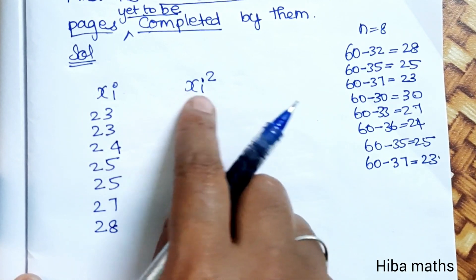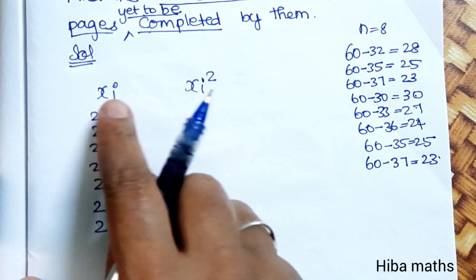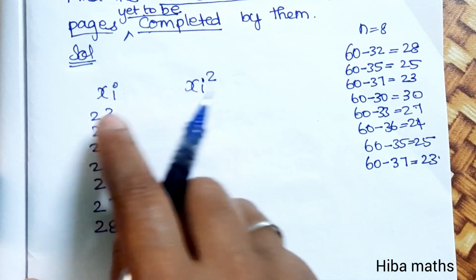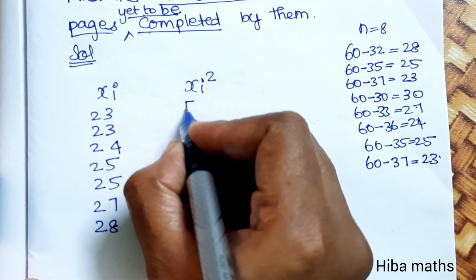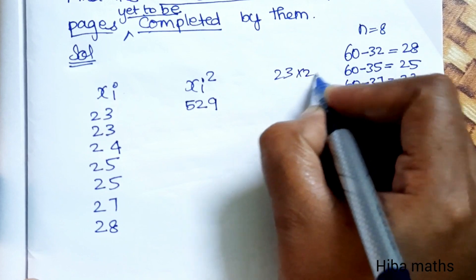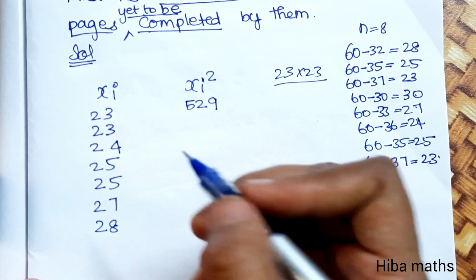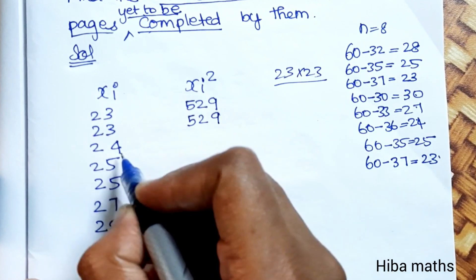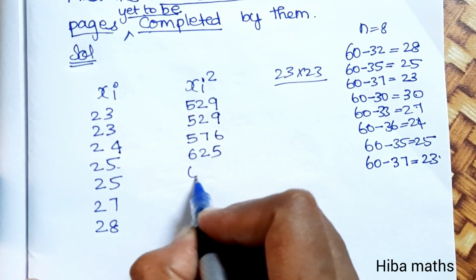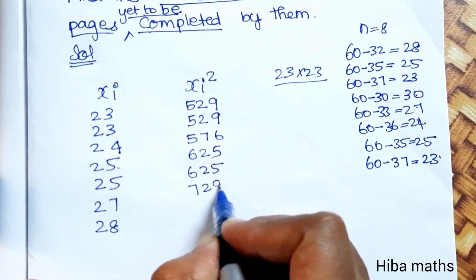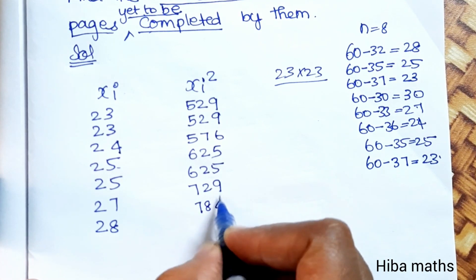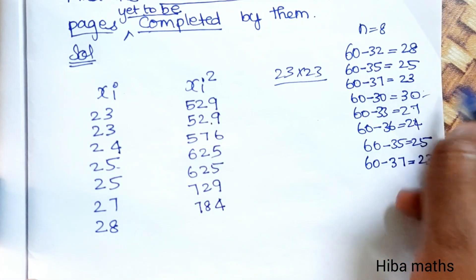Now we compute the xi square column. 23 squared is 529, 24 squared is 576, 25 squared is 625, 27 squared is 729, 28 squared is 784. We take this table of xi square values.